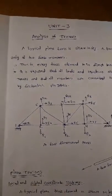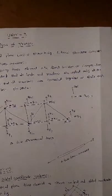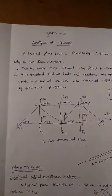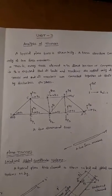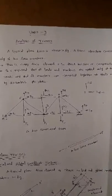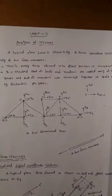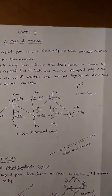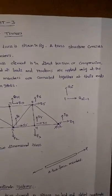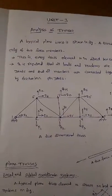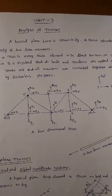Today I will discuss analysis of trusses. A typical plane truss is shown in figure. A truss structure consists of only two-force members — every truss element is in direct tension or compression. It is required that all loads and reactions are applied only at the joints and all the members are connected together by frictionless pin joints.